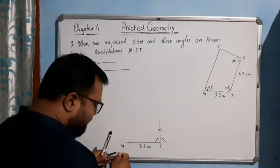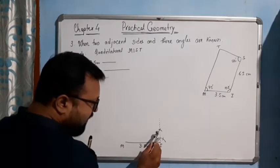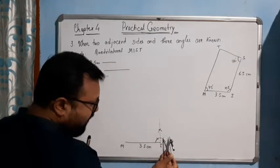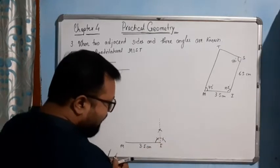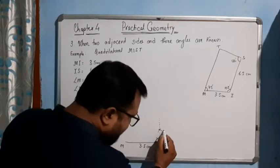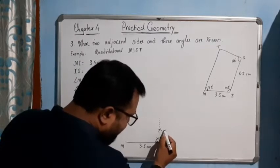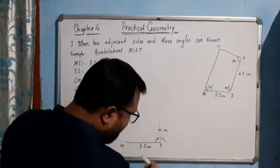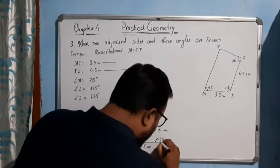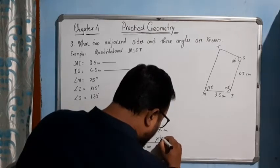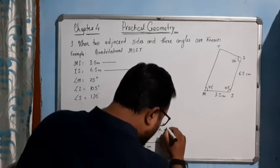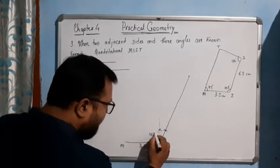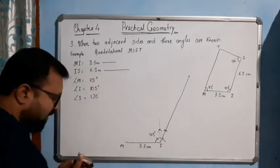Again, place the pin at this point and draw an arc, and place the pin at the other point and draw another arc. So the intersecting point will be somewhere here. If you join this line through the intersection, it gives you 105 degrees. So this is 60 degrees, 60 degrees, 30 degrees, and 15 degrees — giving you 105 degrees.